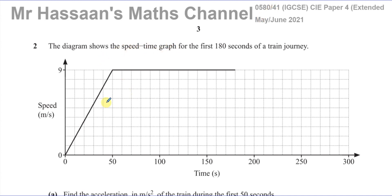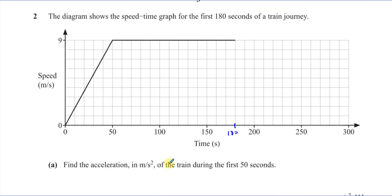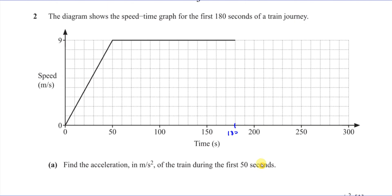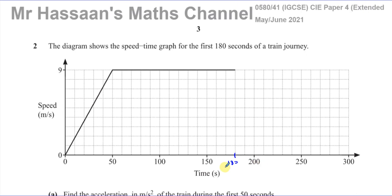Here we have a speed-time graph for the first 180 seconds of a train journey — up to here is 180 seconds. It tells us first to find the acceleration in meters per second squared of the train during the first 50 seconds. So we've got to find the acceleration of this train in the first 50 seconds.